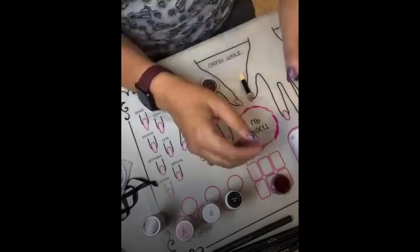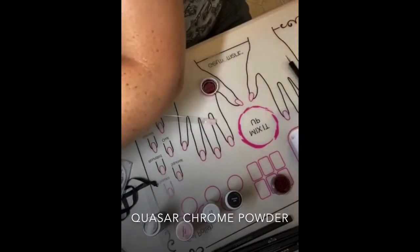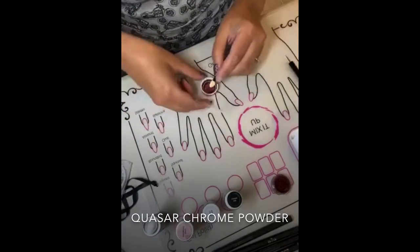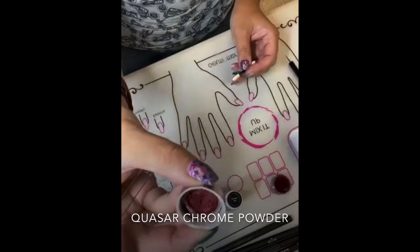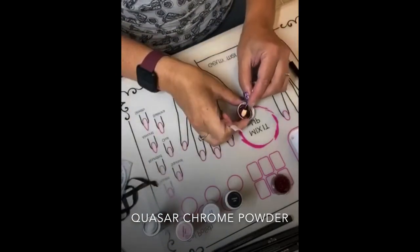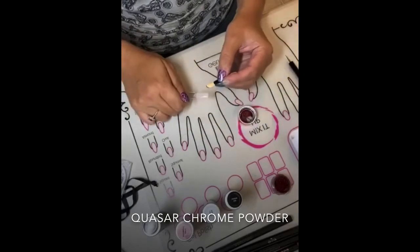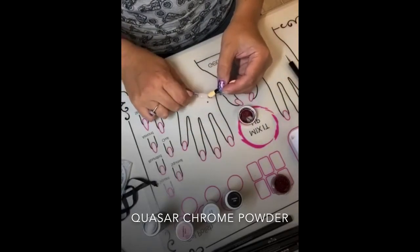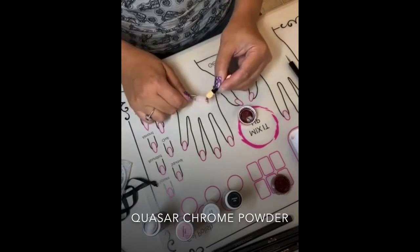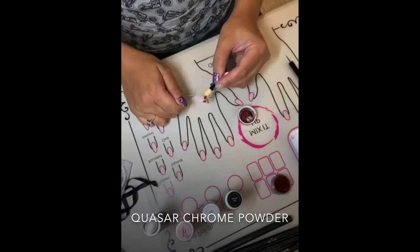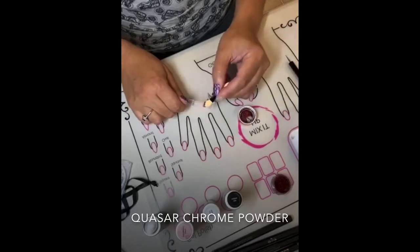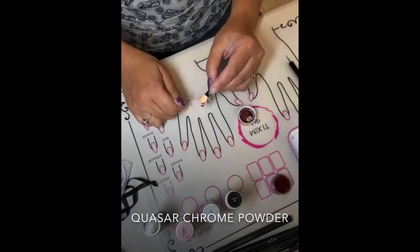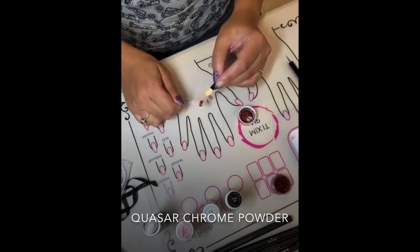Once your nail is cured, take the Quasar chrome powder, a beautiful red chrome powder, and just use your applicator to apply the chrome powder to the freshly cured nail polish. Never wait because you want it while it's still tacky in order for the chrome to adhere nicely to your nail.